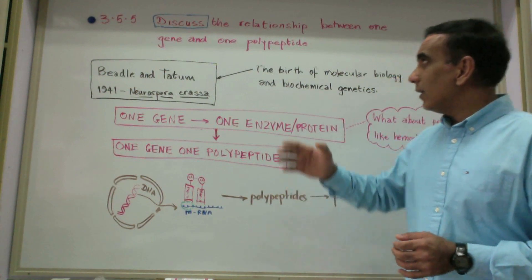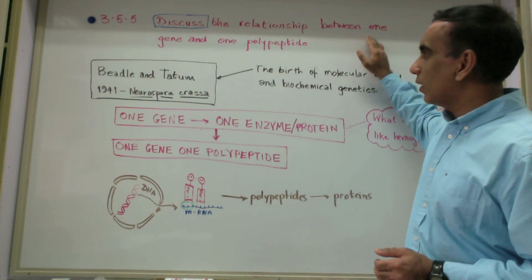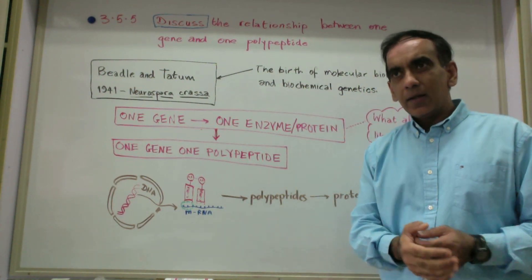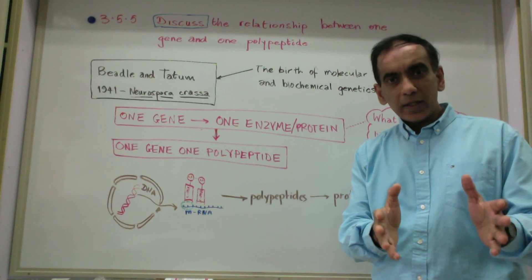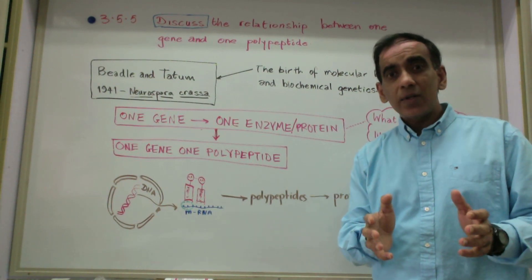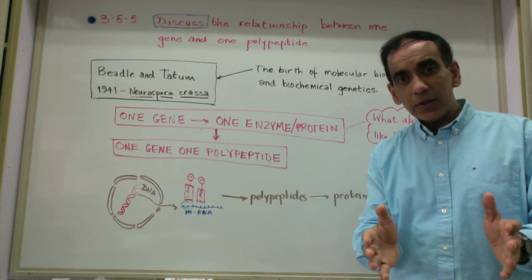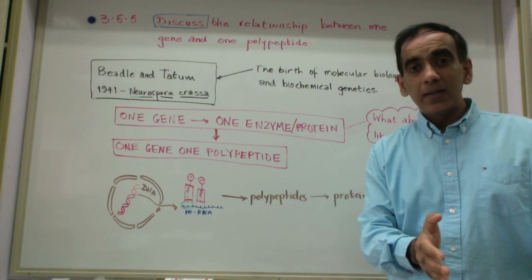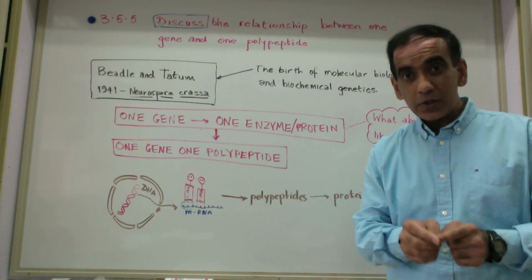In the case of the one gene one polypeptide hypothesis, we would need to explain what it means and then look at how this hypothesis has changed over time, giving reasons for these changes.